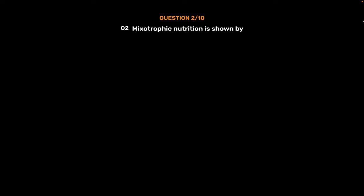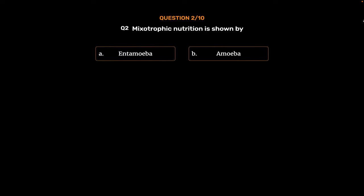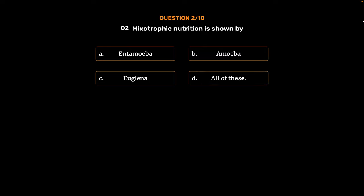Question No. 2: Mixotrophic nutrition is shown by Option A: Entamoeba. Option B: Amoeba. Option C: Euglena. Option D: All of these. The correct answer is Option C, Euglena.